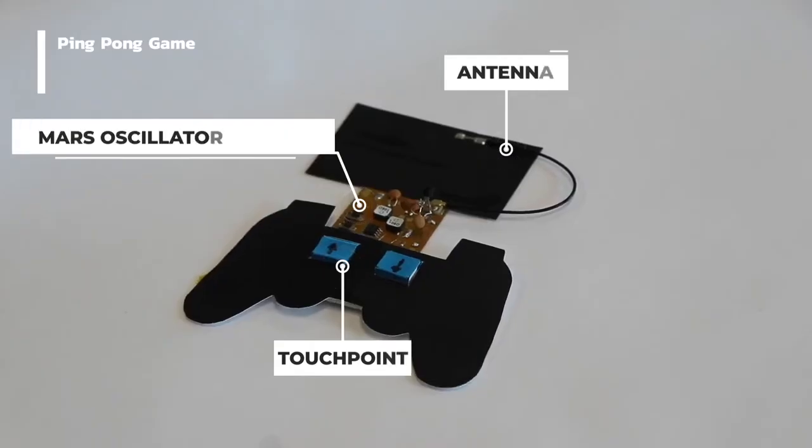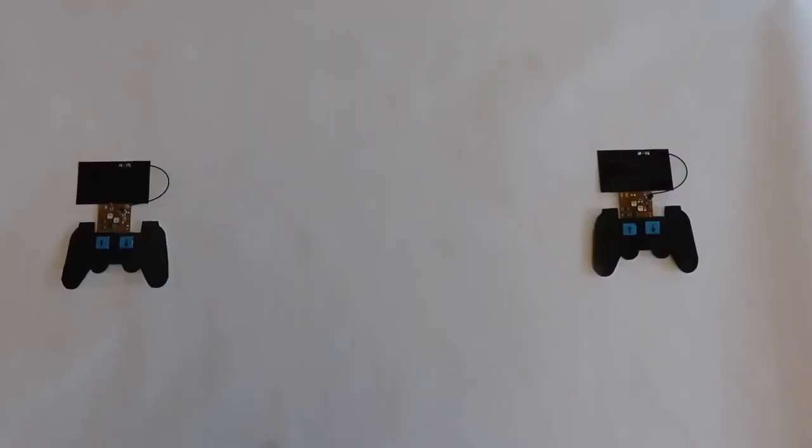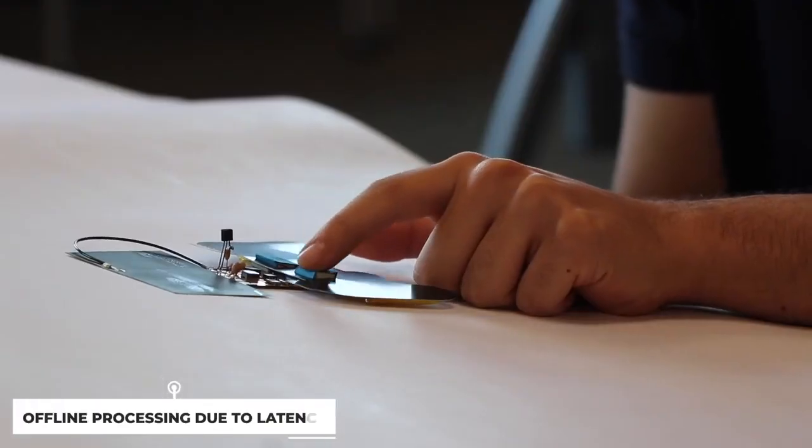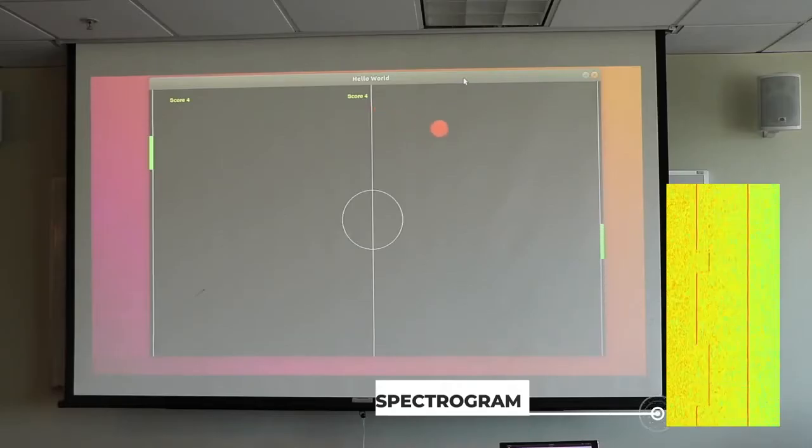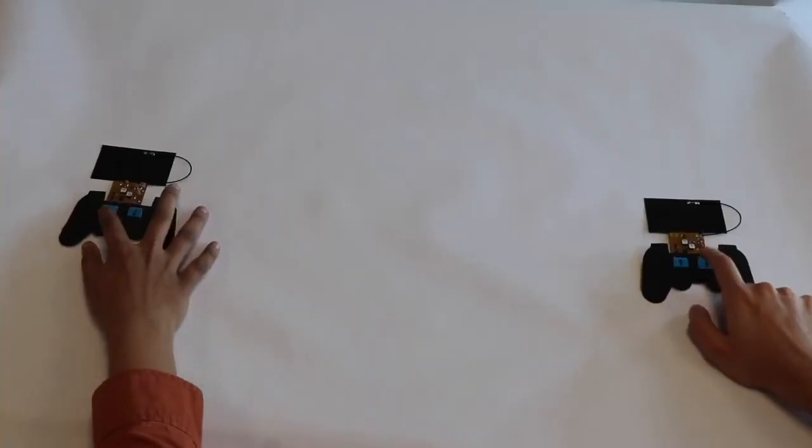MARS tags can also detect multiple discrete touch points. Powered by two photodiodes and leveraging inductance-based touch sensing, we create game controllers using MARS tags with two buttons to play the classic game of Pong.